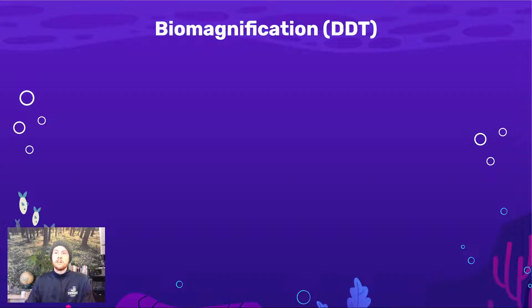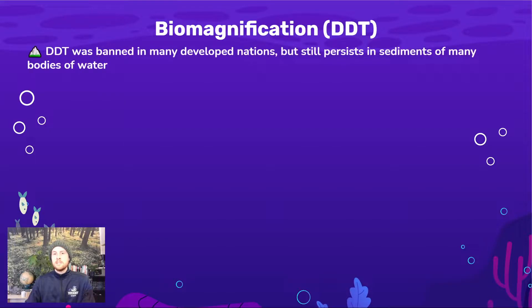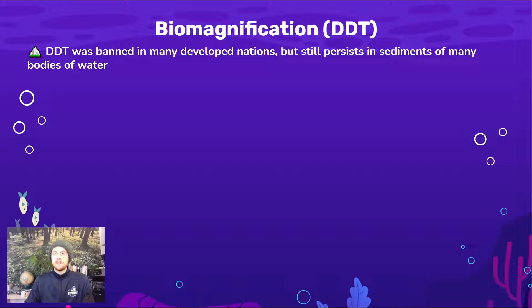Now let's look at another instance of biomagnification, this time focusing on DDT. DDT was a broad-spectrum insecticide used all over the world. It was eventually found to be carcinogenic and really harmful to humans and other organisms, so it was phased out of use. But because it's a persistent organic pollutant, its chemical structure means it doesn't degrade or break down easily in ecosystems, and so it stays around for decades even after it's no longer used.